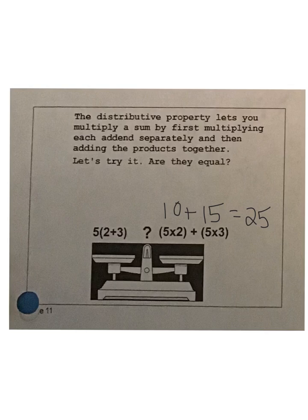On the left side we're going to use the distributive property and multiply 5 times 2, then 5 times 3. So 5 times 2 gets us 10, plus 5 times 3 is 15, and 10 plus 15 gets us 25. So in the end we figure out that these two are equal.